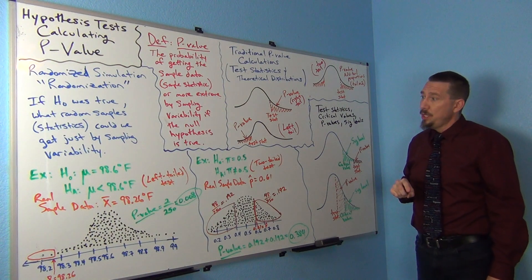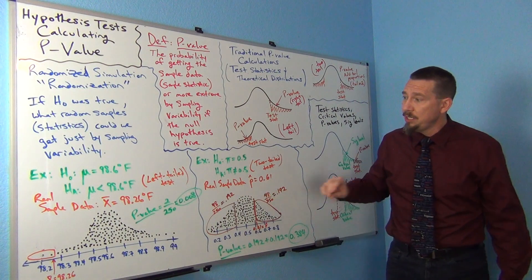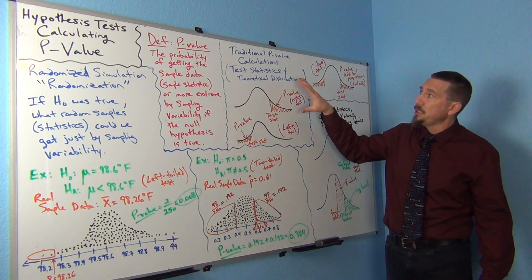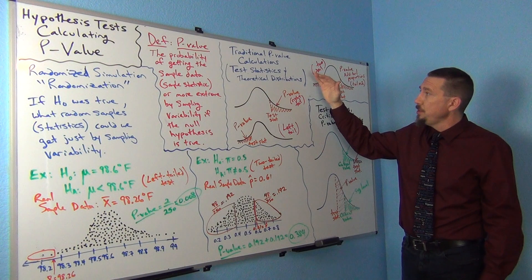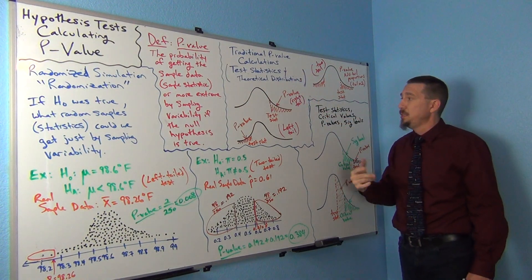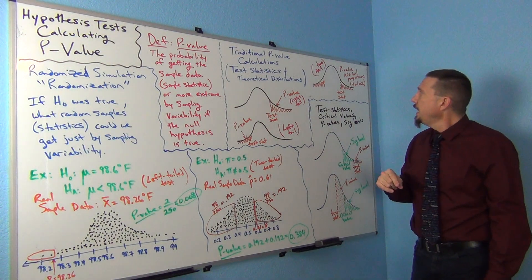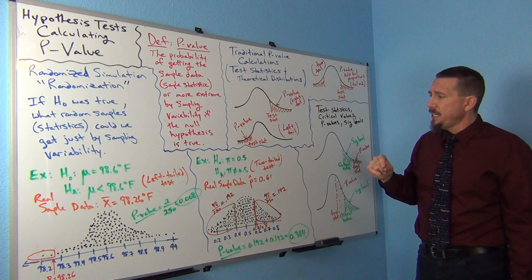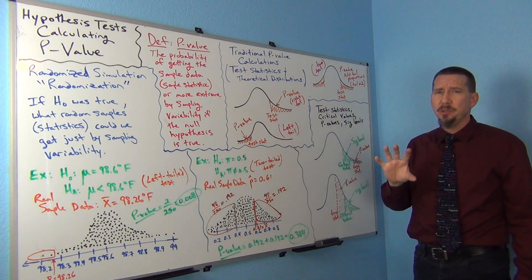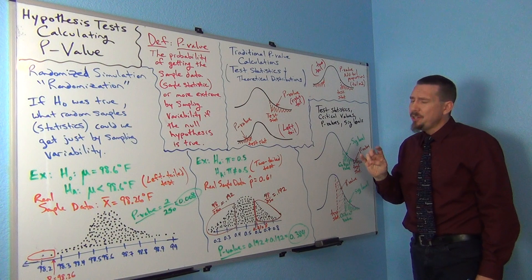Nowadays, a lot of times we use randomized simulation in the computer age. And then traditionally, before computers, we did a lot of this where we'd use the test statistic itself to calculate the p-value. It's really a good idea to have both ideas in your head because you never know which one is going to be used on a problem.